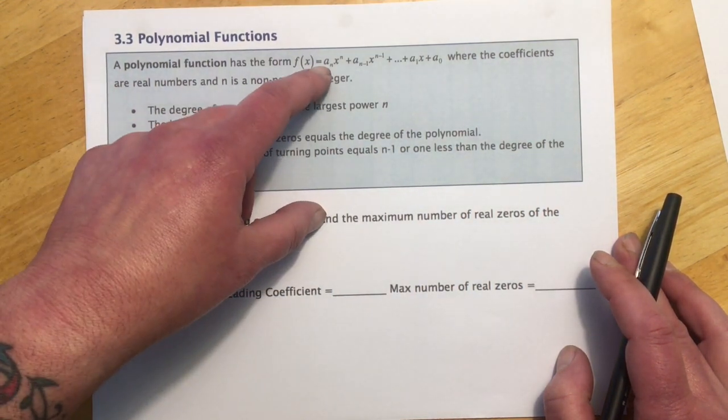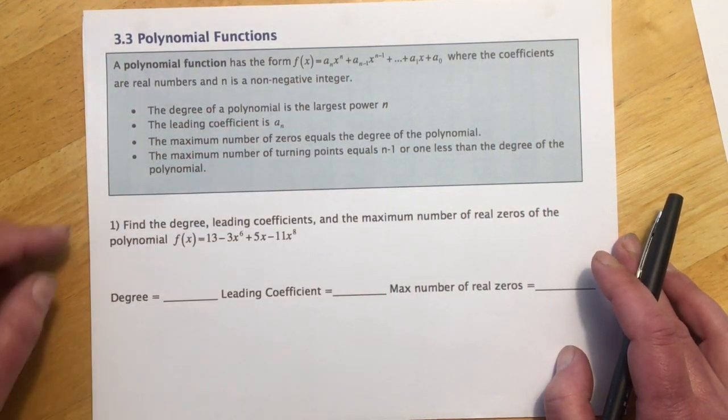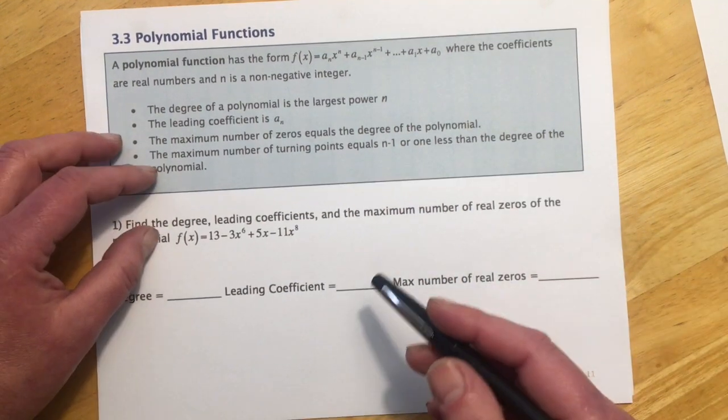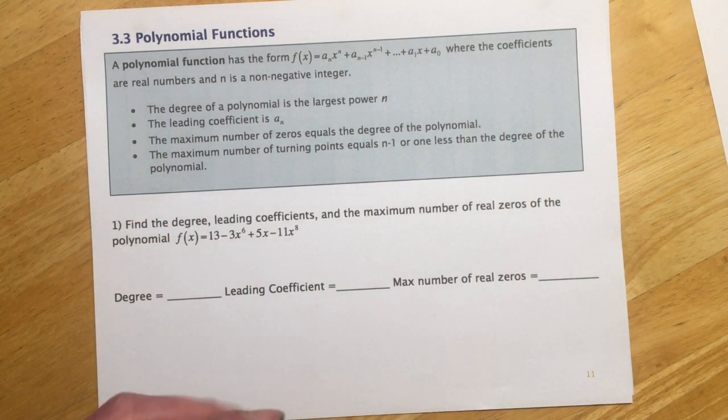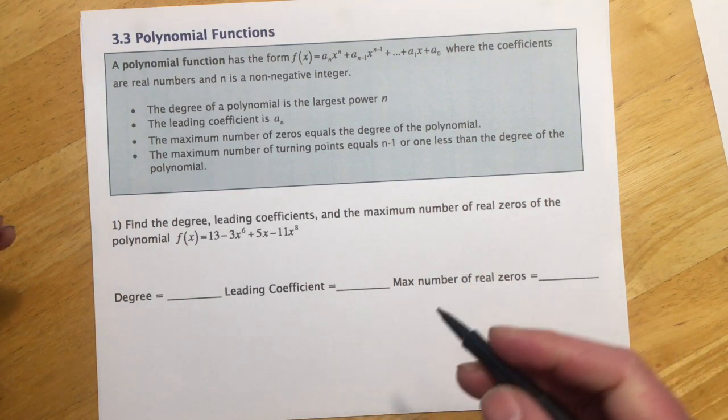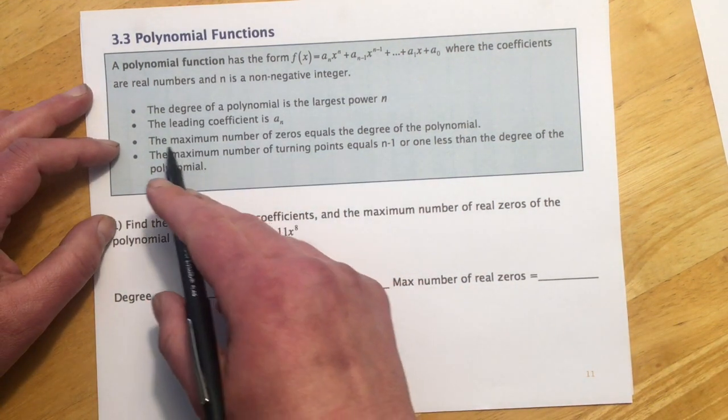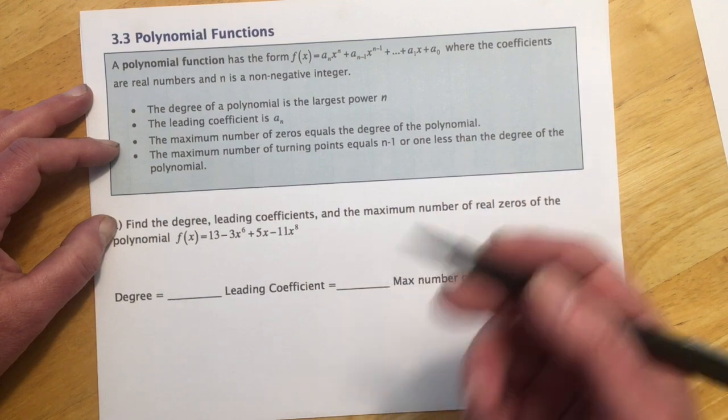a sub n is the leading coefficient for that term. Maximum number of zeros. So what the zeros are is how many times the polynomial crosses the x-axis. This is a maximum number, so it doesn't mean it will cross that many times, but it can.